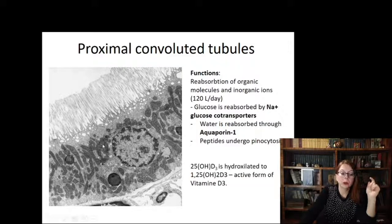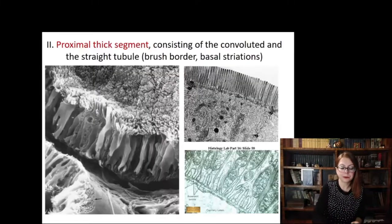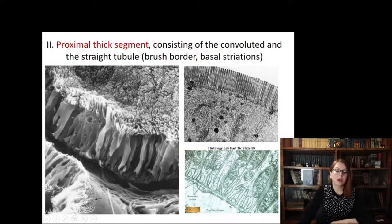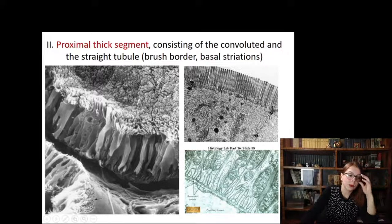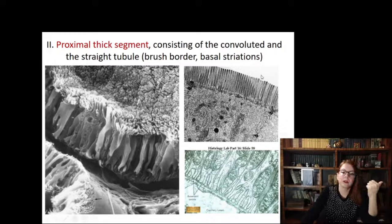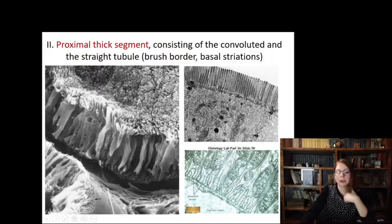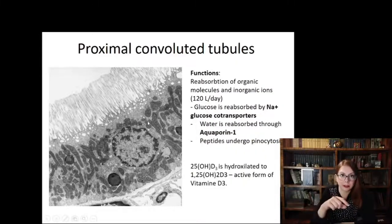Those cells also expose many mitochondria, as reabsorption is an active process requiring energy. On the basal side of the cell there are many infoldings of the plasma membrane with mitochondria interspersed between them — these are called basal striations. In the proximal convoluted tubule, cells have a brush border made up of microvilli and basal striations, both destined to increase the surface area of reabsorption. Also, the final hydroxylation of vitamin D3 takes place exactly here in the proximal convoluted tubules.